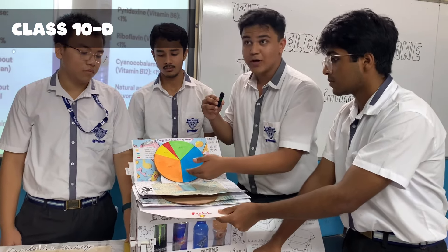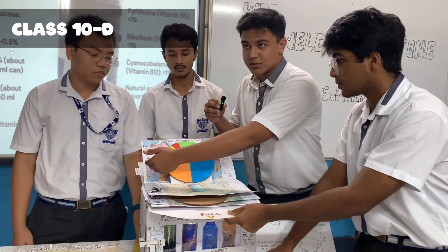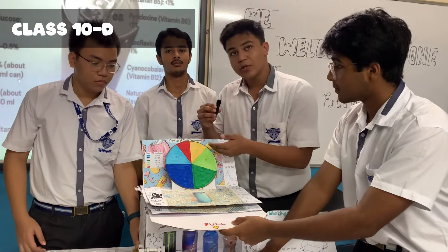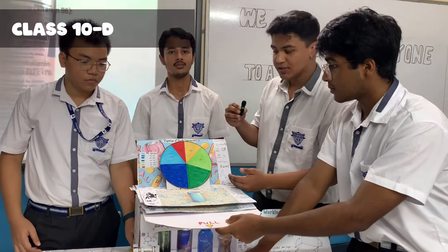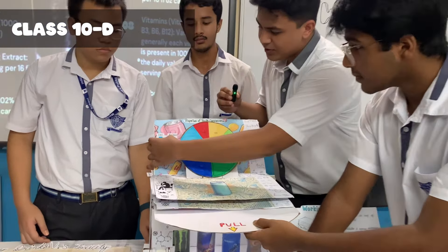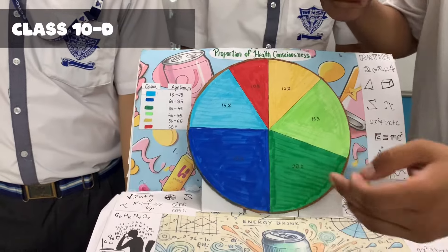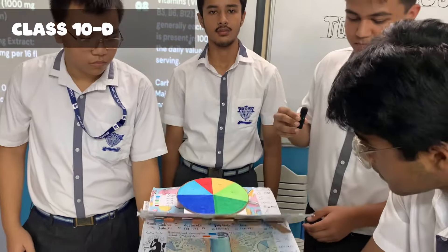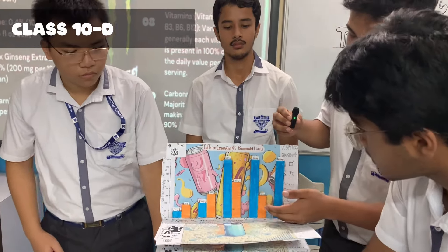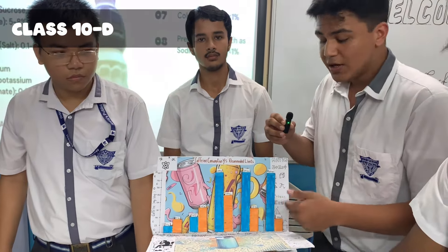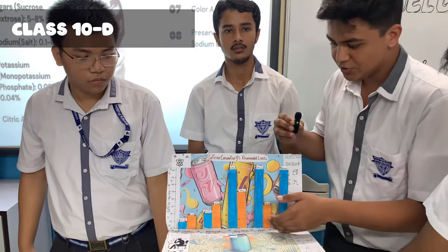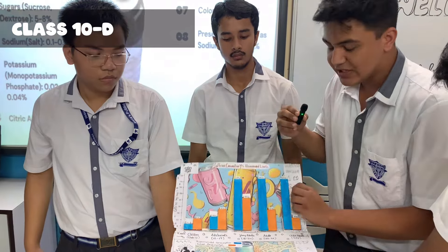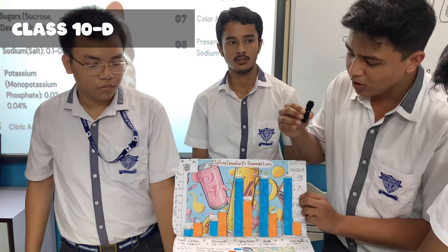Here we can see that children and adolescents consume a lot more energy drinks than other groups. We also have the proportion of people who are actually healthy and avoid energy drinks — people between 26 to 35 years old tend to avoid energy drinks more than other groups. Next, we have the recommended caffeine consumption versus the actual caffeine consumption by various age groups — children under 12 and adolescents of 12 to 17 years old consume a lot more caffeine than their bodies can handle.